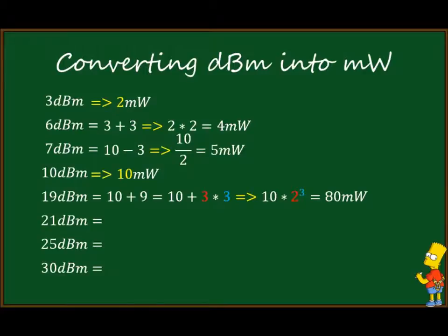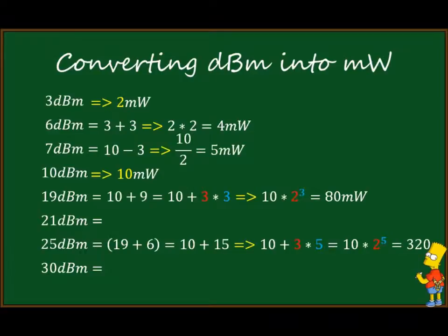So 19 dBm = 10 × 8 = 80 milliwatts. For 25 dBm: using 19 + 6 gives 80 × 4 = 320 milliwatts. If we don't assume knowledge of 19, it's easier as 10 + 15, where 15 = 3 × 5. By our rules that's 10 × 2^5 = 10 × 32 = 320 milliwatts.